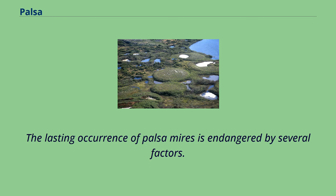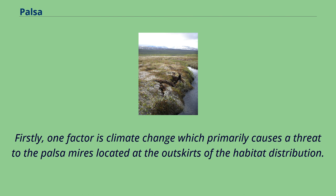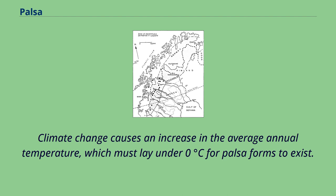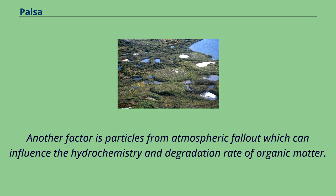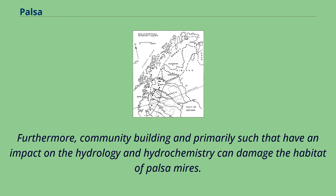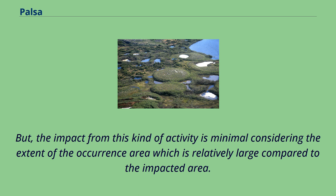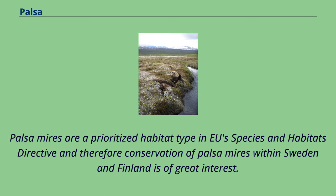The lasting occurrence of palsa mires is endangered by several factors. Firstly, climate change primarily causes a threat to the palsa mires located at the outskirts of the habitat distribution. Climate change causes an increase in the average annual temperature, which must lay under 0 degrees Celsius for palsa forms to exist. Additionally, climate change also causes a change in precipitation with increasing snowfall in the occurrence area for palsa mires, which will also have a negative effect on palsa mires. Another factor is particles from atmospheric fallout which can influence the hydrochemistry and degradation rate of organic matter. Furthermore, community building that has an impact on the hydrology and hydrochemistry can damage the habitat of palsa mires. Palsa mires are a prioritized habitat type in the EU's Species and Habitats Directive, and therefore conservation of palsa mires within Sweden and Finland is of great interest.